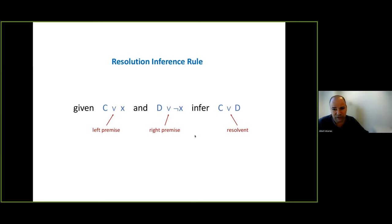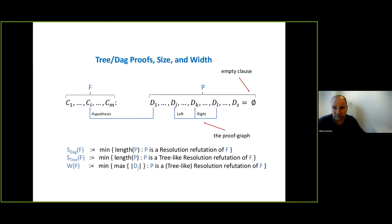In resolution, the rule is: given clauses C ∨ x and D ∨ ¬x, we can infer the resolvent C ∨ D by cutting out the clashing literal. A resolution proof is a sequence of clauses where each is either a hypothesis or derived this way, ending with the empty clause — a contradiction refuting the unsatisfiability of F. The DAG-like size is denoted S_DAC(F), tree-like size S_tree(F). Another key measure is the width: the maximum number of literals in any clause of a refutation, with W(F) being the minimum width over all refutations.